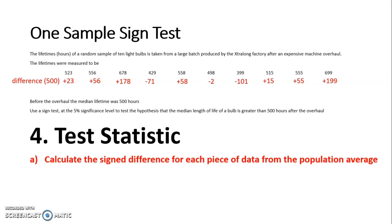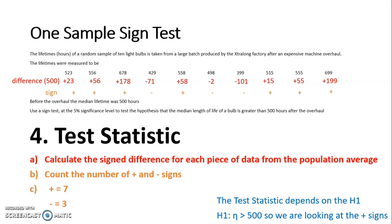And then my next step is I need to count the number of positive and negative signs. For my own benefit, I've just written if there are plus or minus underneath. I could have just done that for this particular question, but it is helpful to work out the differences just for further questions. So looking at those, I can see that I have 7 pluses and I have 3 minuses. My test statistic depends on H1. For this particular question, we were looking at what was over 500, so I'm only looking at how many plus signs there are. So my test statistic for this question is 7.